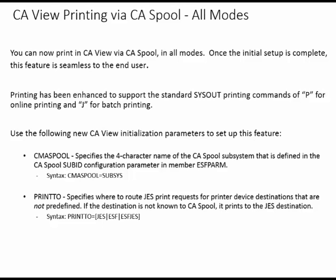You can now print in CA View via CA Spool in all modes. Once the initial setup is complete, this feature is seamless to the end user. Printing has been enhanced to support the standard CISOUT printing commands of P for online printing and J for batch printing.